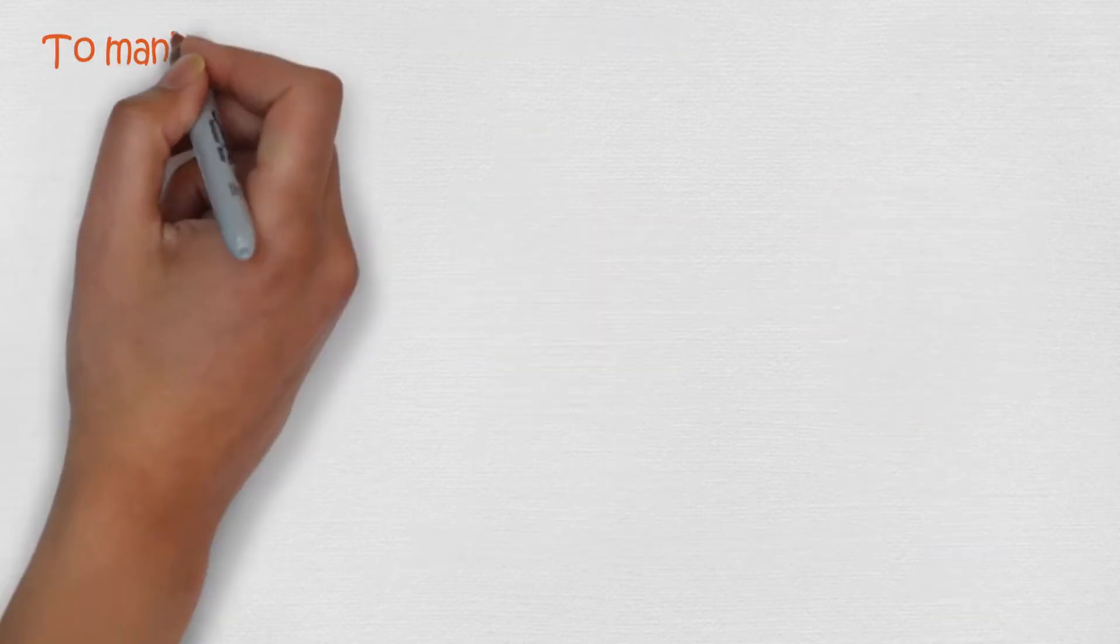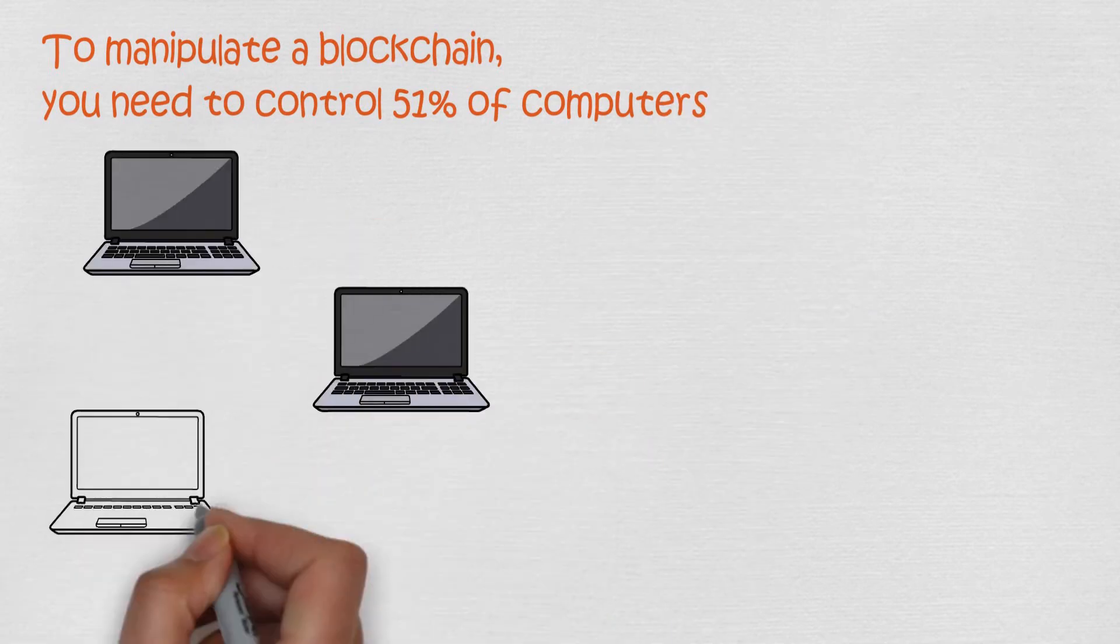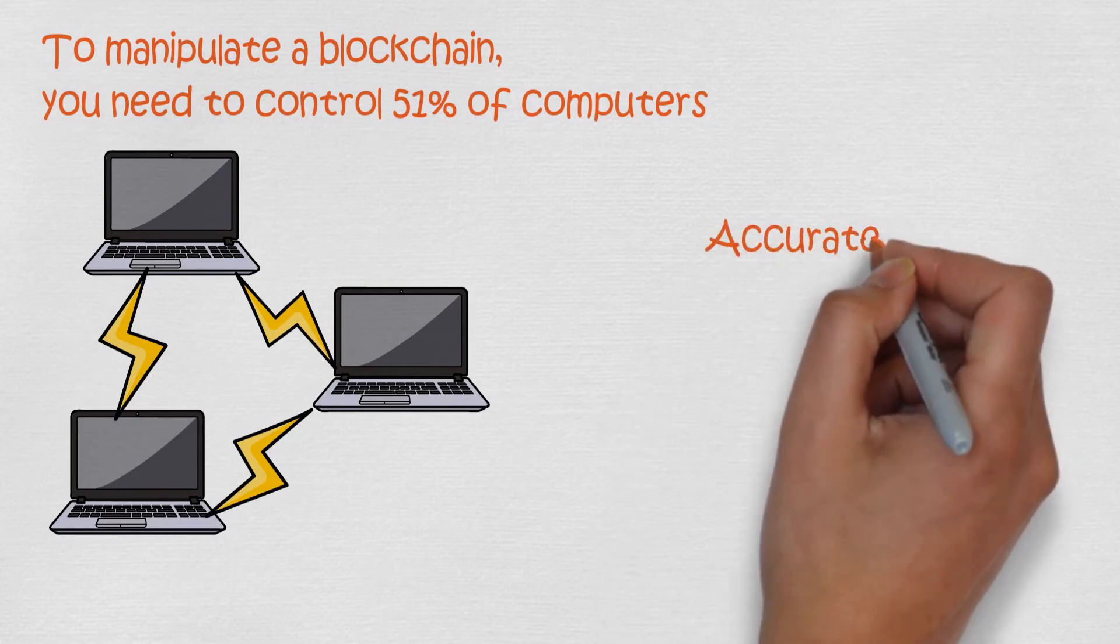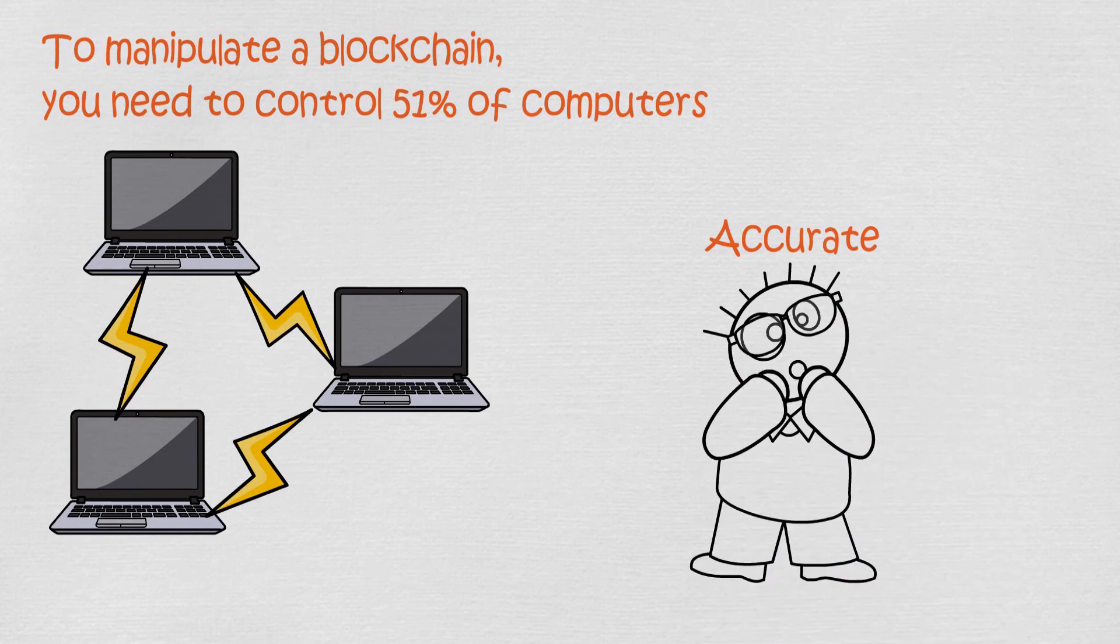To manipulate the blockchain, you would have to be able to control 51% of computers, so the most trusted blockchain would be your manipulated one. Because of this, the blockchain uses public computer network. It's very difficult for one group of hackers to own millions of computers. This also makes the blockchain accurate. One human or computer error won't change the blockchain when a million other computers don't have that error.